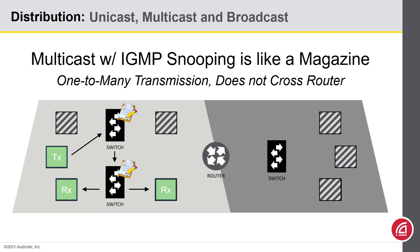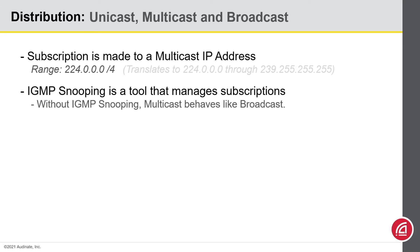So with Multicast, the transmitter only had to send this data once, and the only devices that received it are the ones that wanted it. Multicast, as we showed it to you, assumes that a function like IGMP snooping is engaged on your switch.